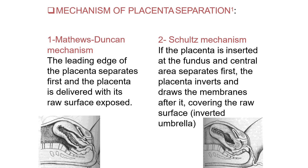The first step in delivery of the placenta is separation. There are two methods: Matthew Duncan's method, known as lateral or marginal separation, and Schultze's method, known as central separation. The lateral separation has a higher chance of bleeding compared to the central separation.